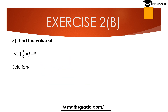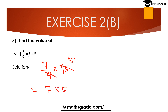Question number 8th part: 7 divided by 9 of 45. 'Of' means multiplication. 9 cancels with 45, as 9 fives are 45. So 7 multiplied by 5 is 35. The answer is 35. The value of 7/9 of 45 is 35.